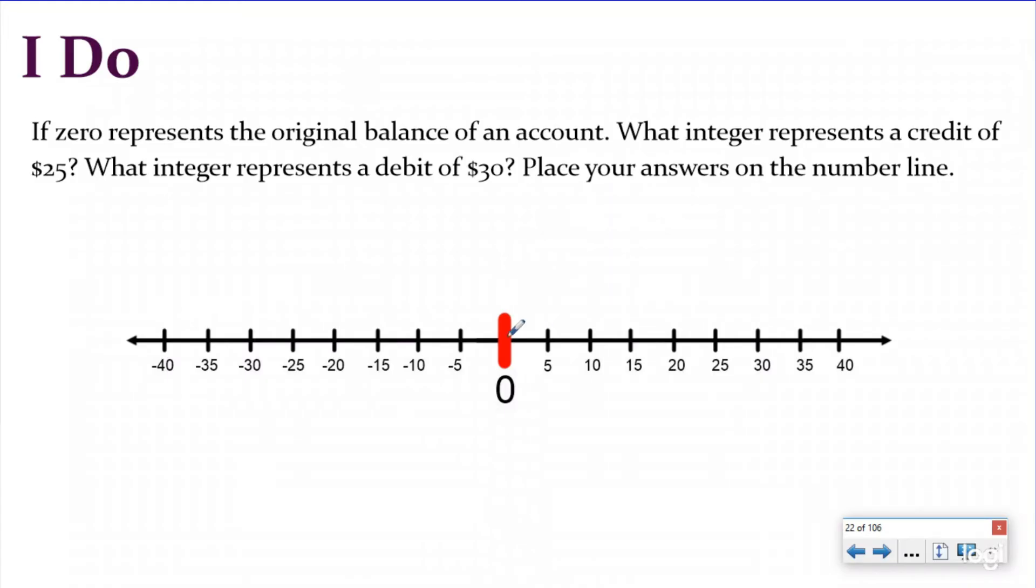So you came in. Now zero for this question doesn't necessarily represent zero dollars. It represents how much money you had when you came into the bank. So let's say you went into the bank and you had a thousand dollars in your bank account. That'd be the original balance of the bank account. This is where you're starting.